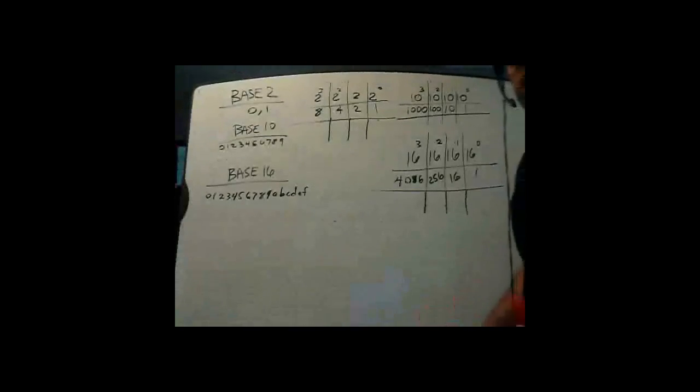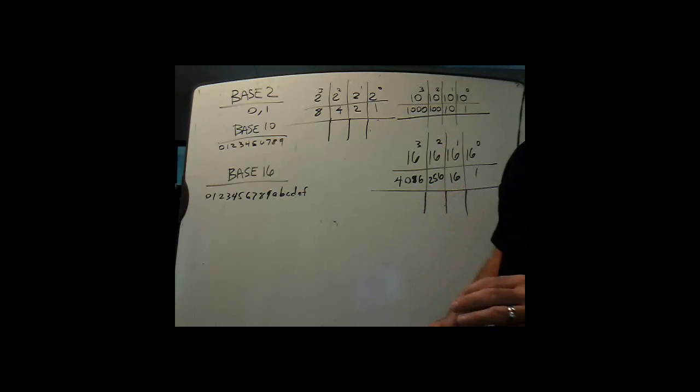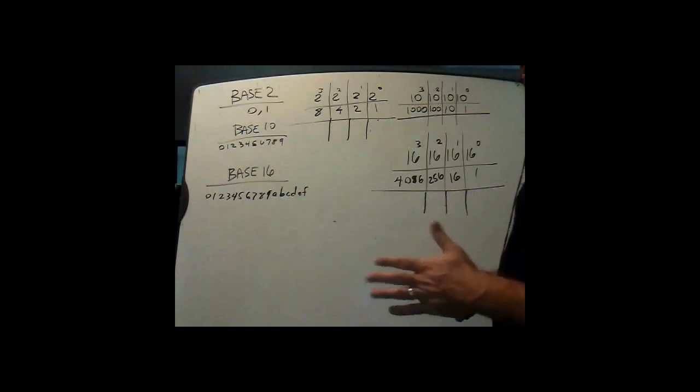If you want to learn how to use hexadecimal, one of the difficulties is that we're so used to using the decimal counting system, a base 10 counting system, that if we try to switch to binary or hexadecimal, it's difficult at first. So if you want to learn how to do it easily, the best way is to go back to how you learned how to count when you were a kid.